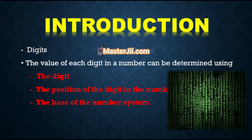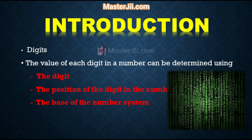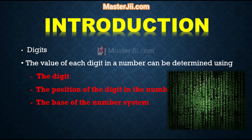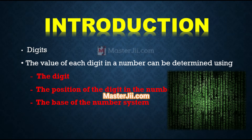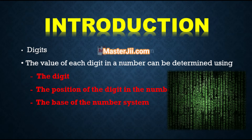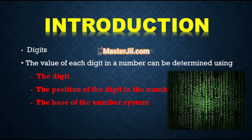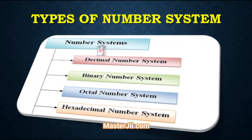When we type some letters or words, the computer translates them into numbers, as a computer can understand only numbers. A computer can understand the positional number system, where there are only a few symbols called digits, and these symbols represent different values depending upon the position they occur in the number. The value of each digit in a number can be determined using the digit, the position of the digit in the number, and the base of the number system, where the base is defined as the total number of digits available in the number system.